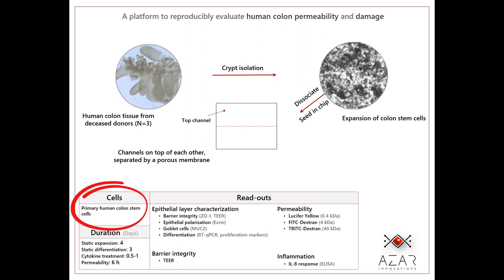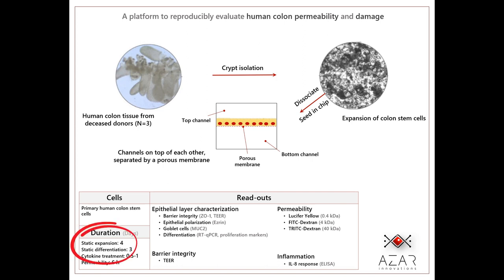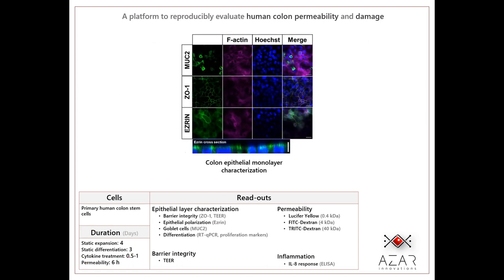The chip has a top and a bottom channel and a porous membrane between them. The cells are seeded in the top channel to form a monolayer on top of the membrane and kept in static condition in proliferation and differentiation media for seven days total. Of course they characterize the epithelial layer to show there are mucus-producing goblet cells, tight junctions, and epithelial polarization.